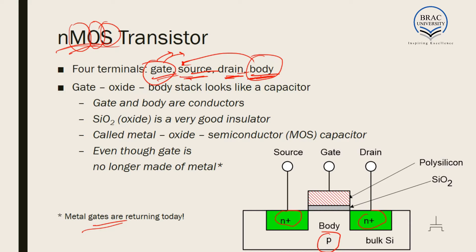Between the gate and the body, there is an insulator layer which is silicon dioxide — a very good insulator. This insulator is part of the MOS structure: Metal, Oxide (the insulator), and Semiconductor. We can see that here we have a metal at the gate, an insulator, and the body is conducting. As a result, we get a capacitor-type arrangement in the case of MOSFETs.